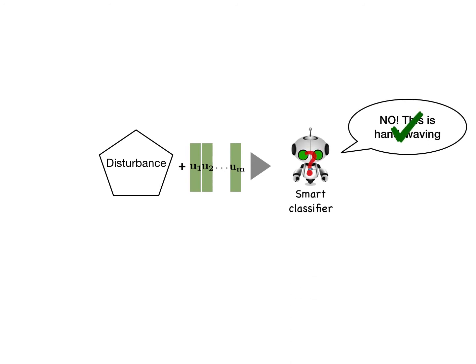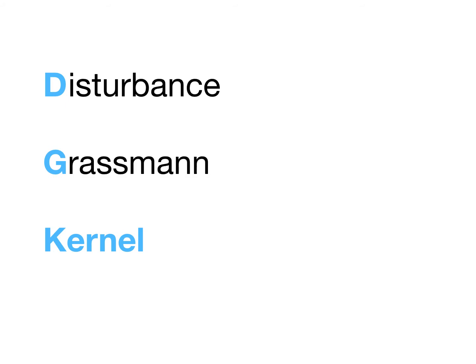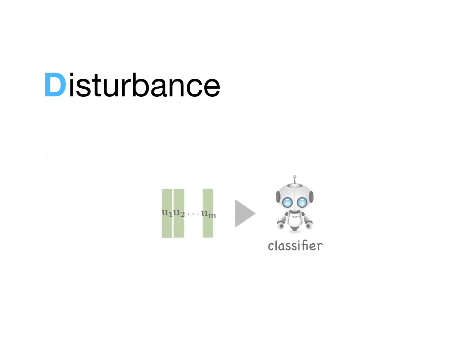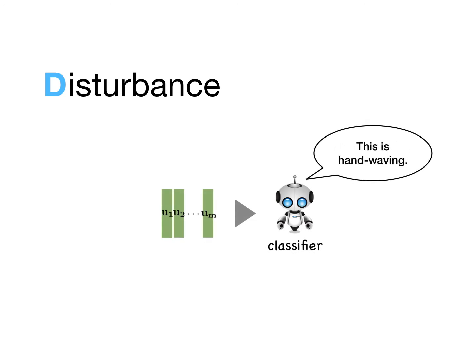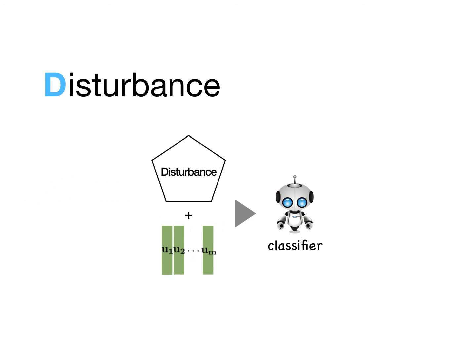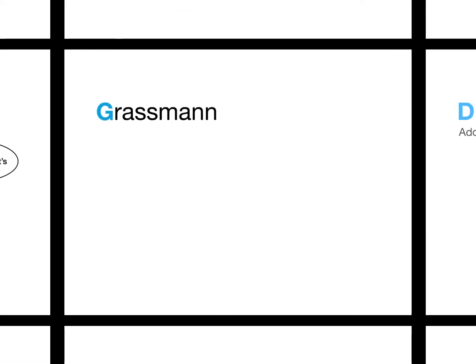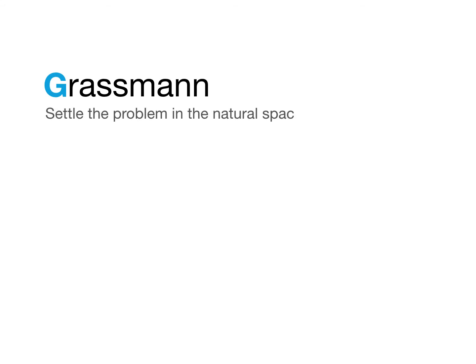So how do we obtain such classifiers? With the DG kernel, support vector machines can achieve this. DG kernel is short for Disturbance Grassmann kernel. An ordinary classifier can recognize a subspace as long as it has learned it, but it may fail when there are disturbances. Thus, we proactively add potential disturbances during training, making the disturbance known to the classifier. We then settle the problem in the natural space of subspace data: the Grassmann manifold.